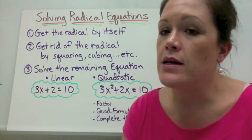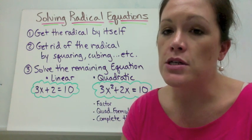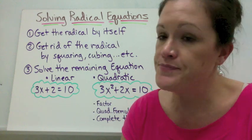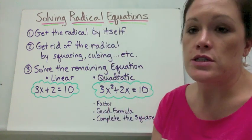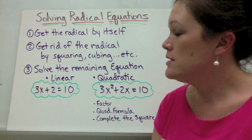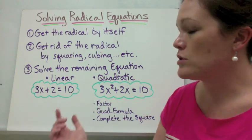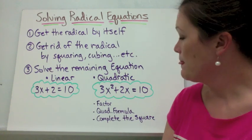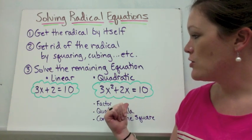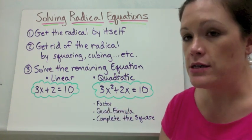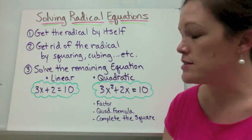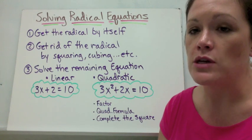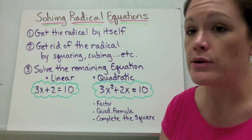Then you want to solve the remaining equation. The remaining equation could be linear, or it could also be a quadratic equation. A linear equation has only one variable and nothing is squared or cubed. But a quadratic equation has a term that's squared and a term that's not squared — for instance, like 3x squared plus 2x. There's no way to solve those without using one of your quadratic methods.